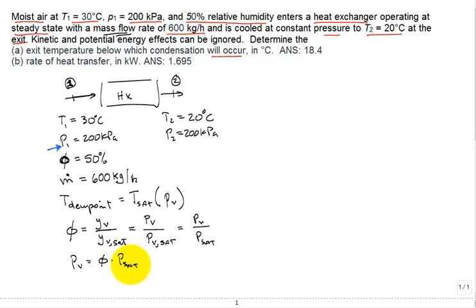What is PSAT at 30 degrees C? Let me substitute some numbers. The relative humidity is 50%. You look up in the table, let's say table A2, at 30 degrees C, you find that saturation pressure, 4.246 kPa. So that's our partial pressure of the vapor. It's 2.123 kPa.